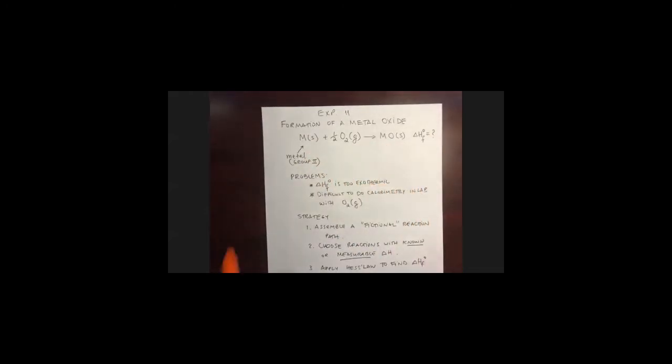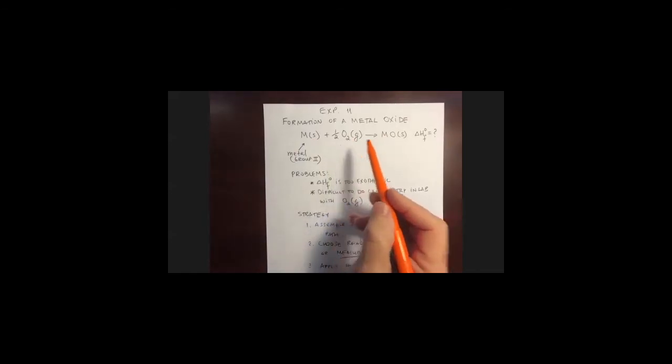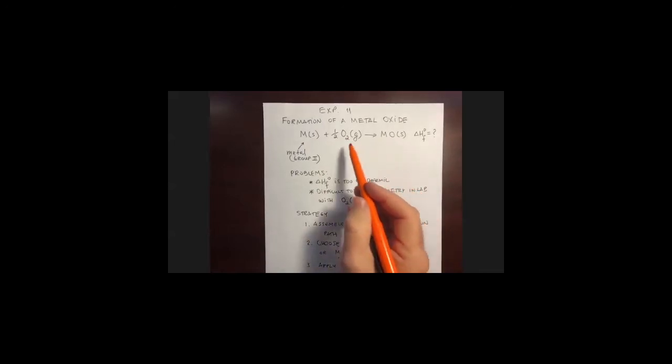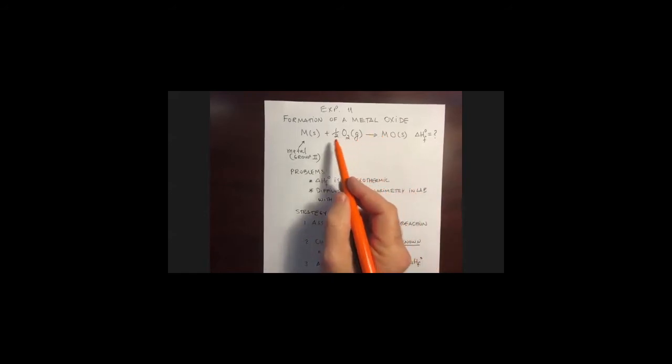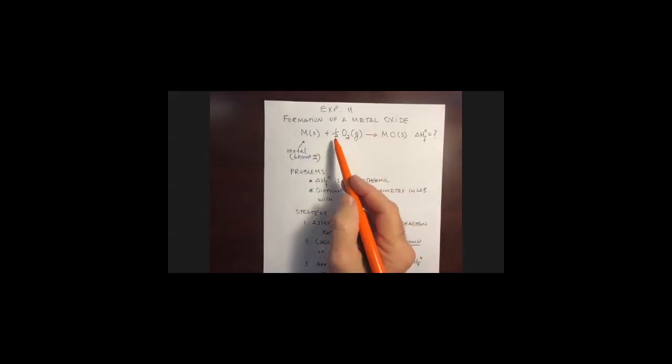We are interested in the reaction that represents the formation of a metal oxide. It's generic here, but what we're dealing with is a metal from group 2 — like magnesium or calcium — reacting with oxygen to form the oxide of the metal. This is balanced so as to yield one mole of the compound from its component elements in their standard states, which is why we sometimes have to use a fractional coefficient so that the coefficient on the product will be one.